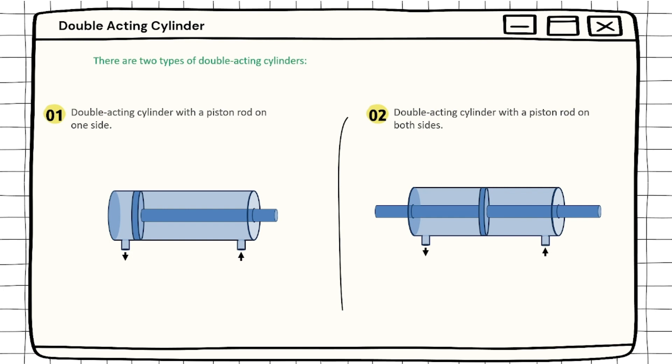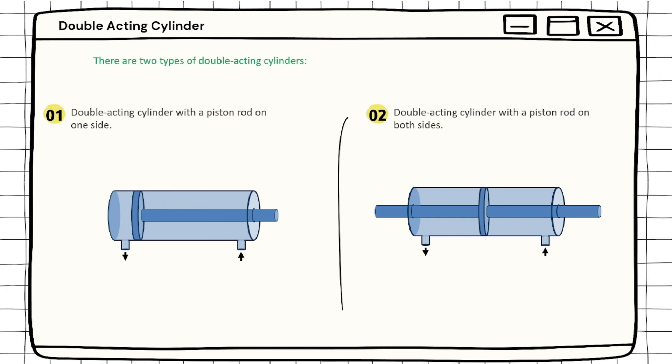In double acting cylinder with piston rod on one side, when the pressure is applied from the pressure port it extends the cylinder, and to retract the cylinder the pressure is applied to the other side. In double acting cylinder with piston rod on both sides, when we give pressure from the pressure port it extends the cylinder on one side, and when we give pressure to the other side it also extends the cylinder to the other side.